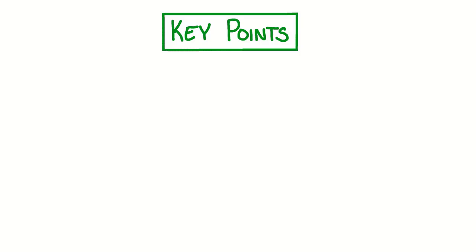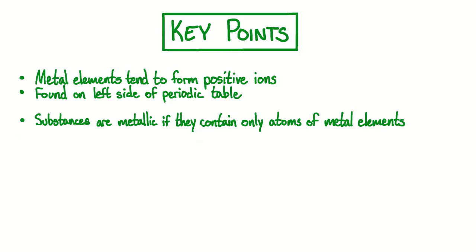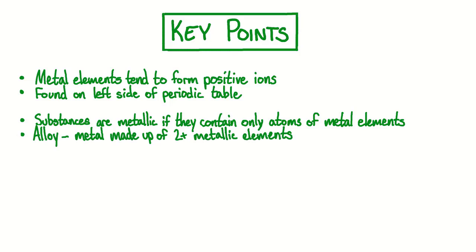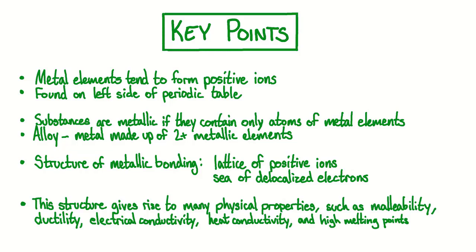Now let's review the key points of metallic bonding. Metal elements tend to form positive ions and are found on the left-hand side of the periodic table. Substances are considered metallic if they contain only atoms of metal elements; if made of two or more metallic elements, they are called alloys. Metallic bonding involves positive ions arranged in a lattice while electrons flow freely in a sea of delocalized electrons. This structure gives rise to properties such as malleability, ductility, electrical conductivity, heat conductivity, and high melting points.